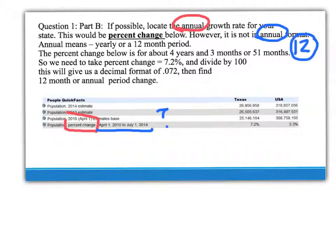So we need to figure out the 7.2% growth rate over 4.3 years, but how would that be for one year — twelve months — an annual rate? Texas is growing twice as fast as the United States.